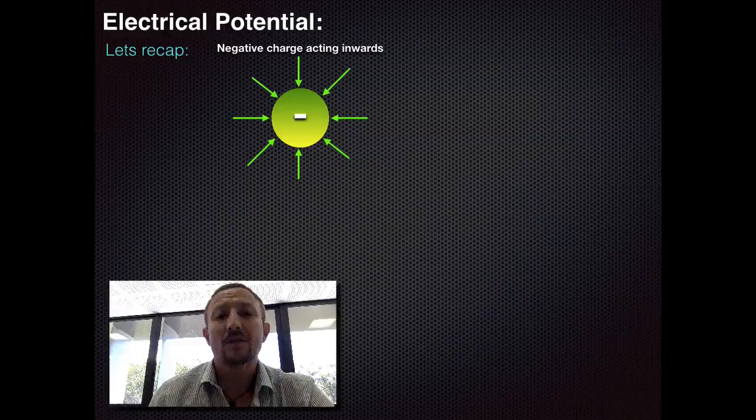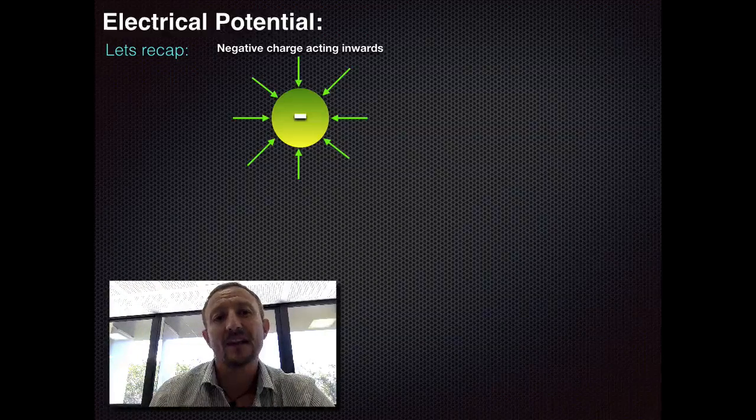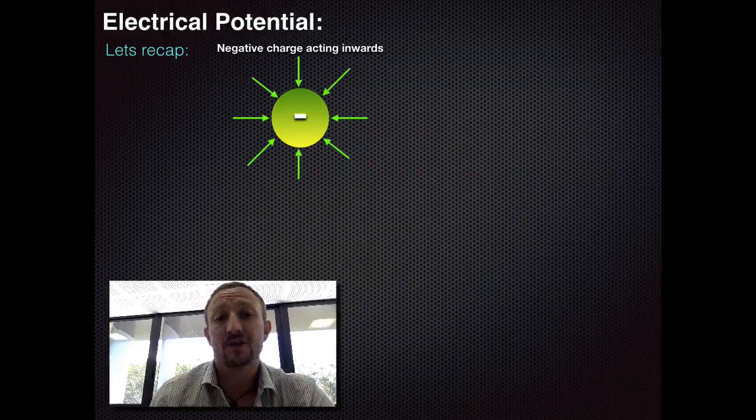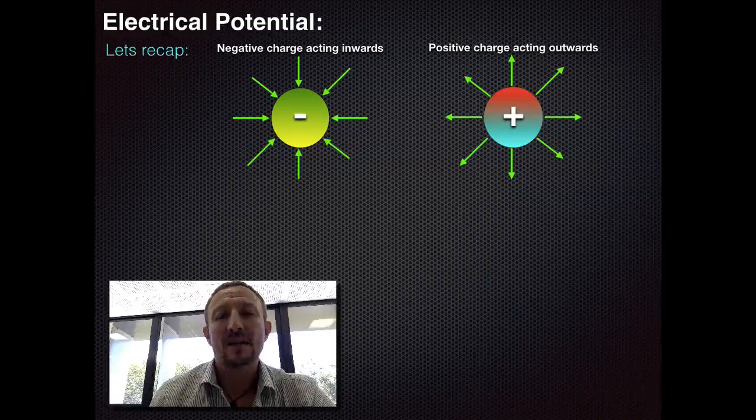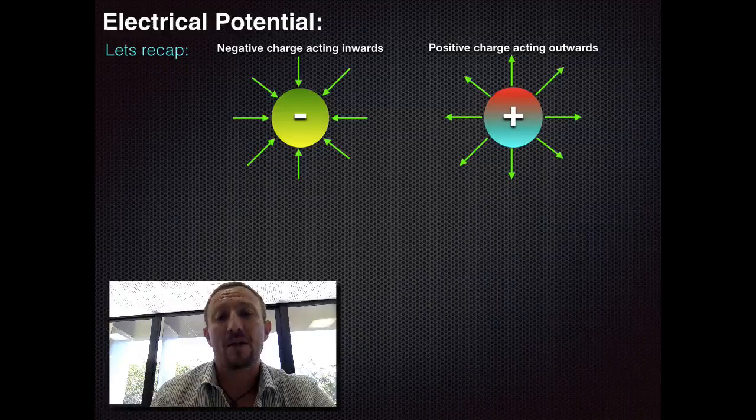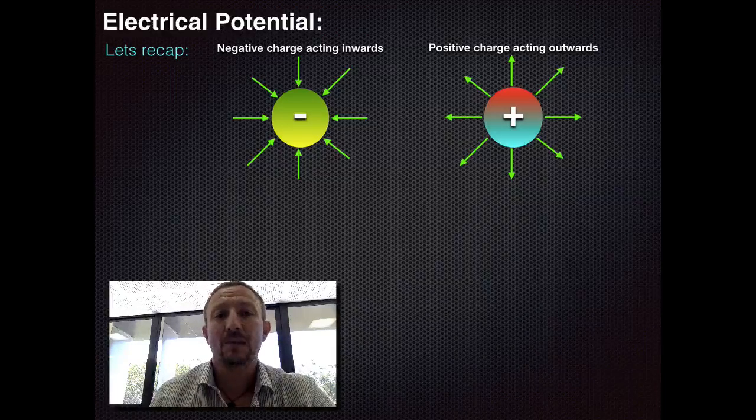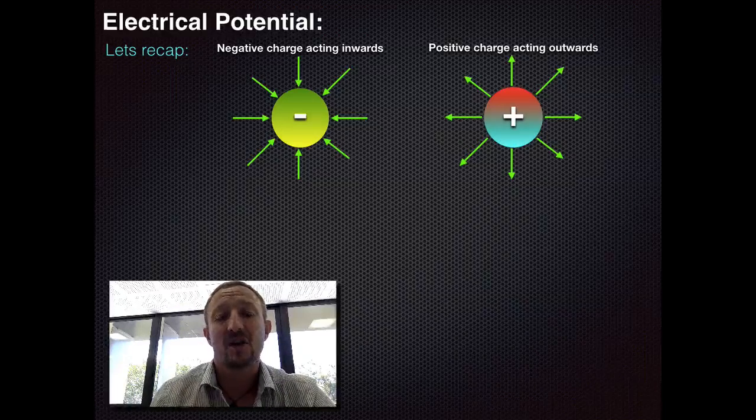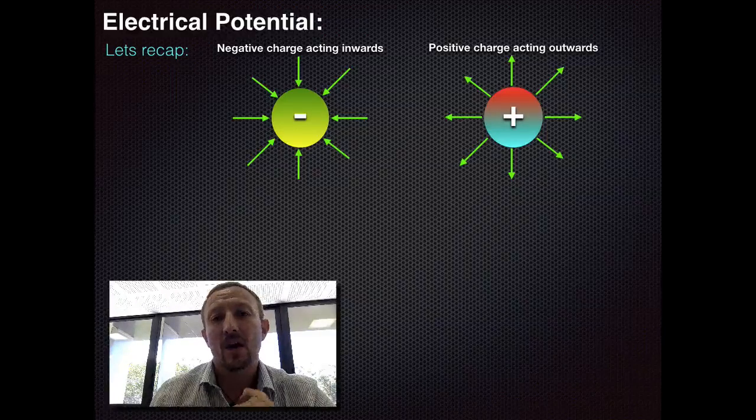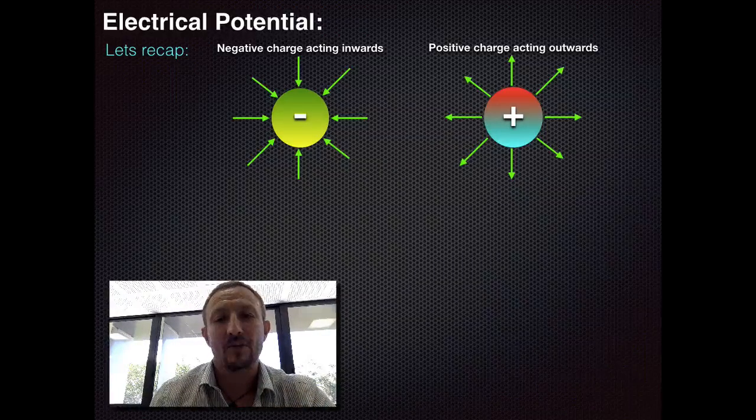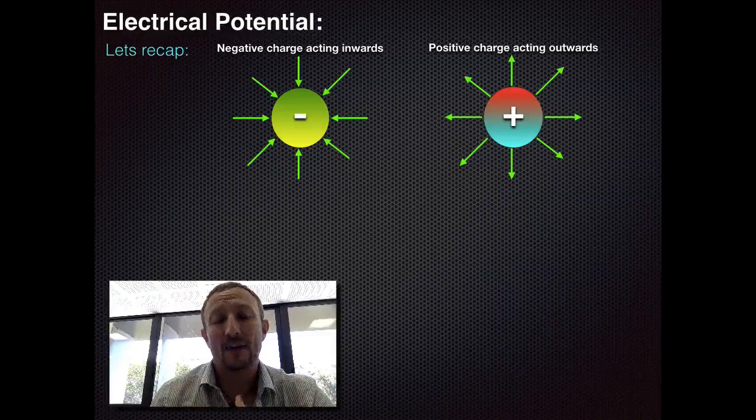Now firstly we know that we've got two types of charges: negative charges and positive charges. Negative charges basically have field lines which are generated, which is the force that would be experienced by a test charge if placed close to these charges. We know that for a negative charge the electric field lines go in an inward direction and for a positive charge they act out.